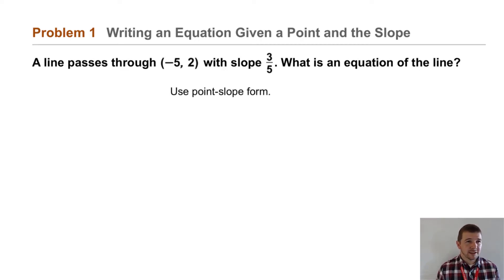Well, first consider point-slope form: y - y₁ = m(x - x₁). And we'll substitute our values: 3/5 for m, the slope, and the point (-5, 2) for x₁ and y₁.